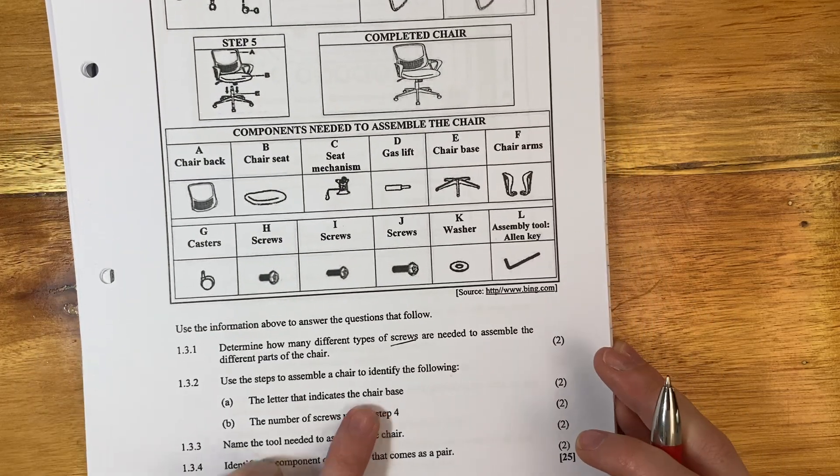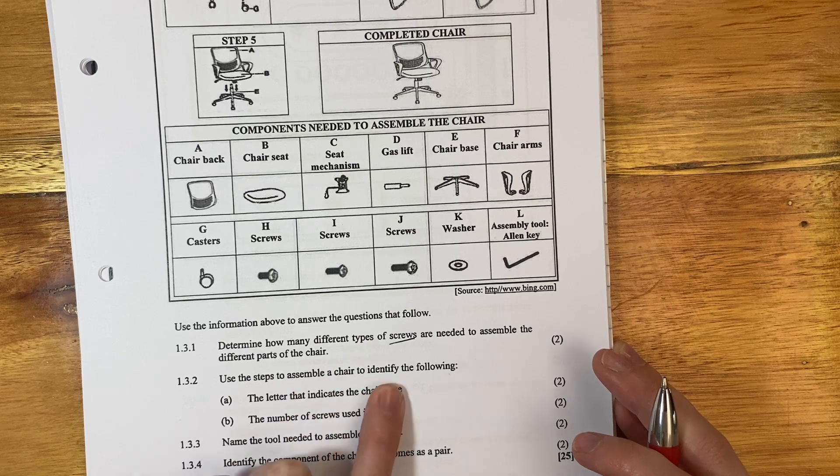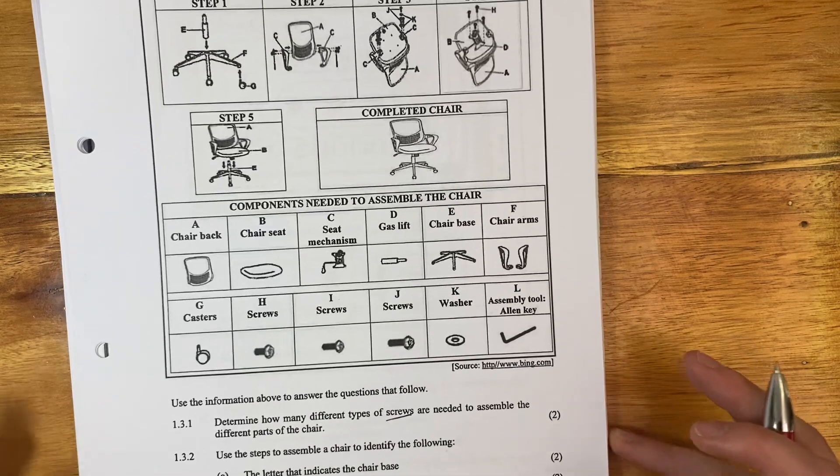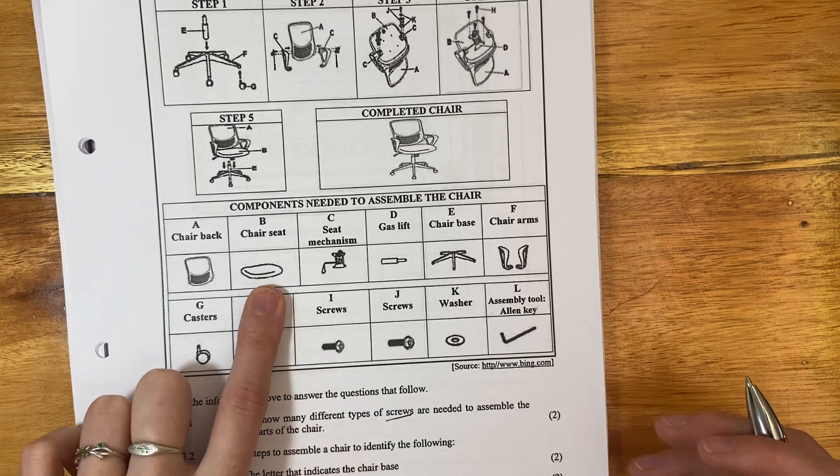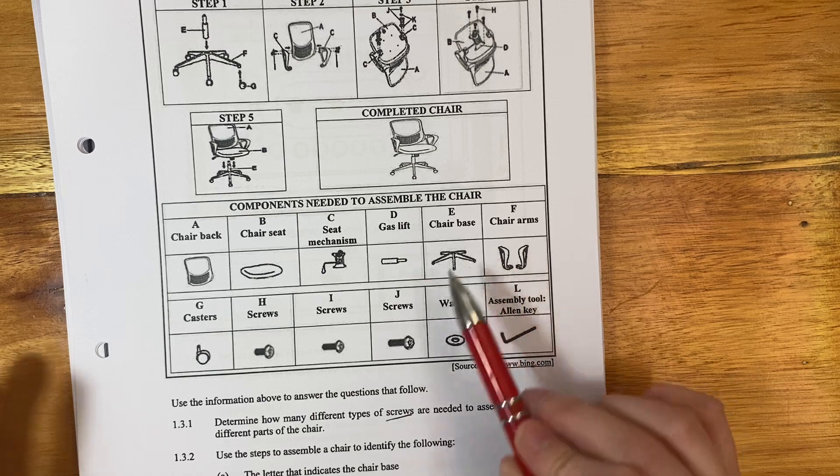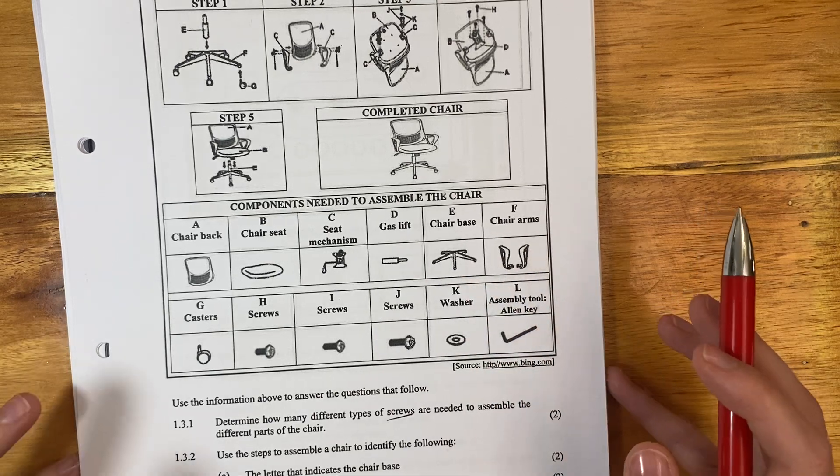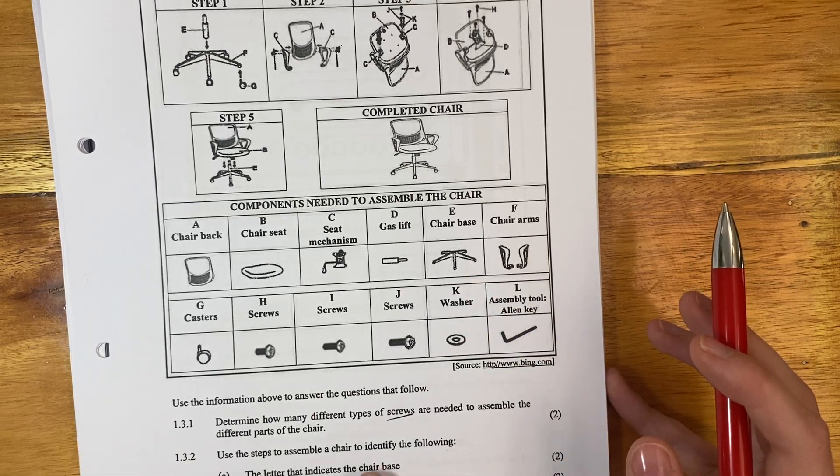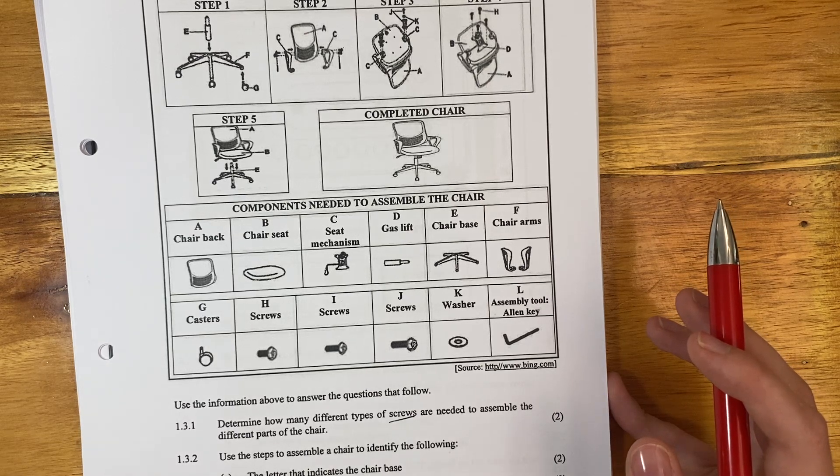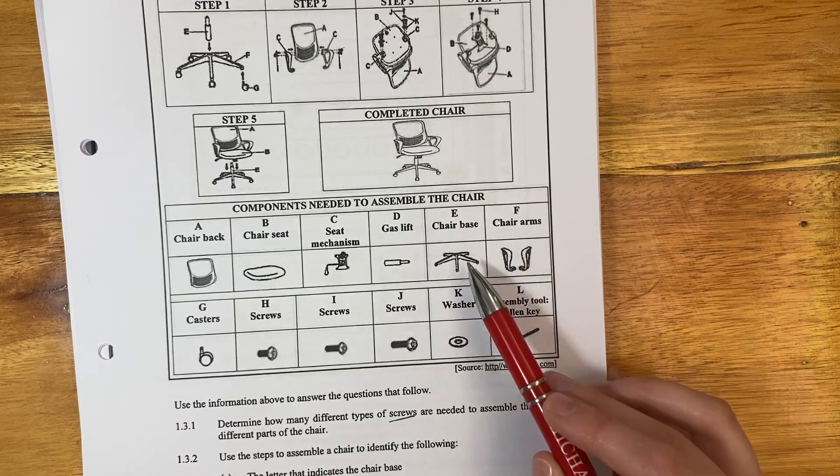Use the steps to assemble a chair to identify the following: The letter that indicates the chair base. Now, when I first looked at this, I thought the chair base was like the chair seat. No, it's not. There's the chair base, right? So make sure that you use both in doing this because originally when I did it, I misread it. So the chair base, which it says the letter that indicates the chair base. Well there's the chair base.